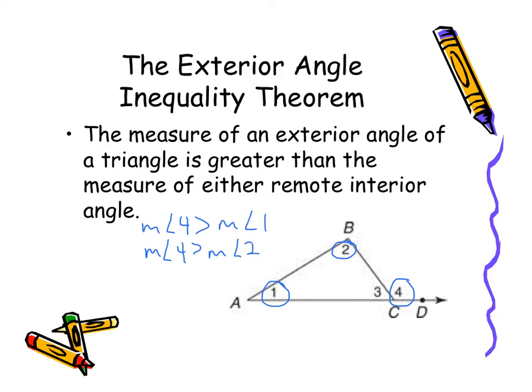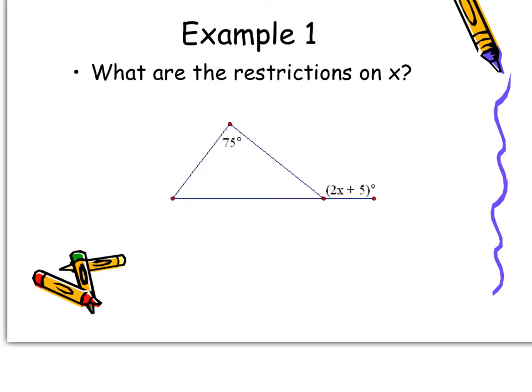We're going to apply this into an algebra type situation. Here we have an exterior angle, and one of our remote interior angles is 75 degrees. So I know that 2x + 5 is greater than 75 degrees.